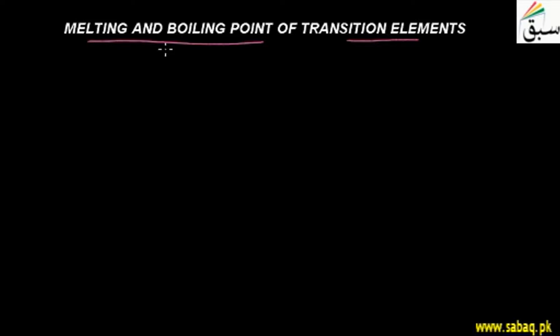Students, we will talk about another characteristic property of transition elements: melting and boiling points. The melting point is the temperature at which a substance melts from solid to liquid. The temperature at which it converts to vapor or gaseous form is the boiling point. Melting and boiling points are high for transition elements because the metallic bonding is strong.